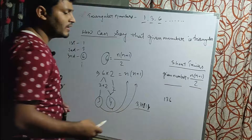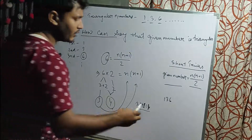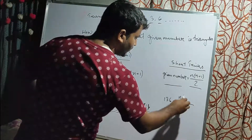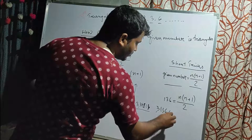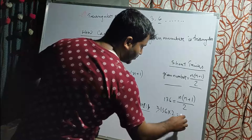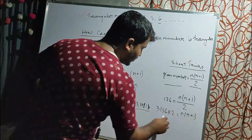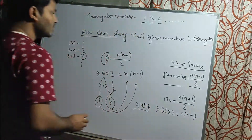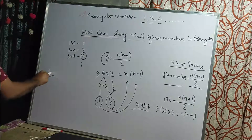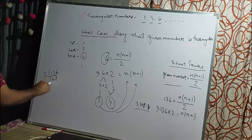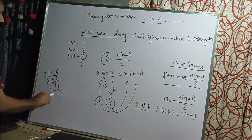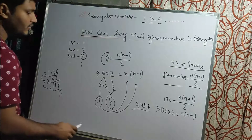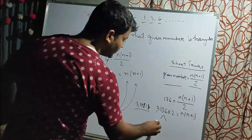Now let's check: is 136 a triangular number? We set 136 equal to n(n+1)/2, so 136 times 2 equals n(n+1), giving us 272. Now we factorize 272: 2 times 136, 4 times 68, 8 times 34, and 8 times 34 gives us 8 times 17, so 272 equals 16 times 17.